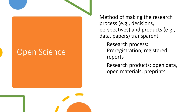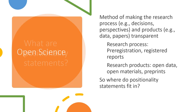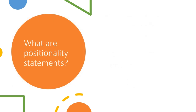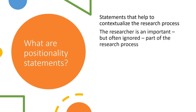So these are different ways that you can make things more transparent. So you might be wondering where do positionality statements fit in. Positionality statements come from qualitative and critical quantitative paradigms and they're basically statements that help to contextualize the research process. They often go in the methods section, though not always. And they basically help to fold the researcher back into the study, because the researcher is an important but often ignored part of the research process.